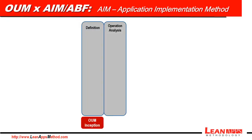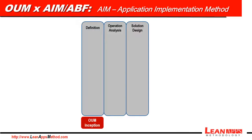The third phase is Solution Design, and the goal here is to use the requirements created during Operational Analysis and finalize the system design and proposed application setups. Both Operational Analysis and Solution Design from AIM are related to the Elaboration phase at OUM, where we develop the detailed requirements, partitioning the solution, creating any necessary prototypes, and baselining the architecture of the system.